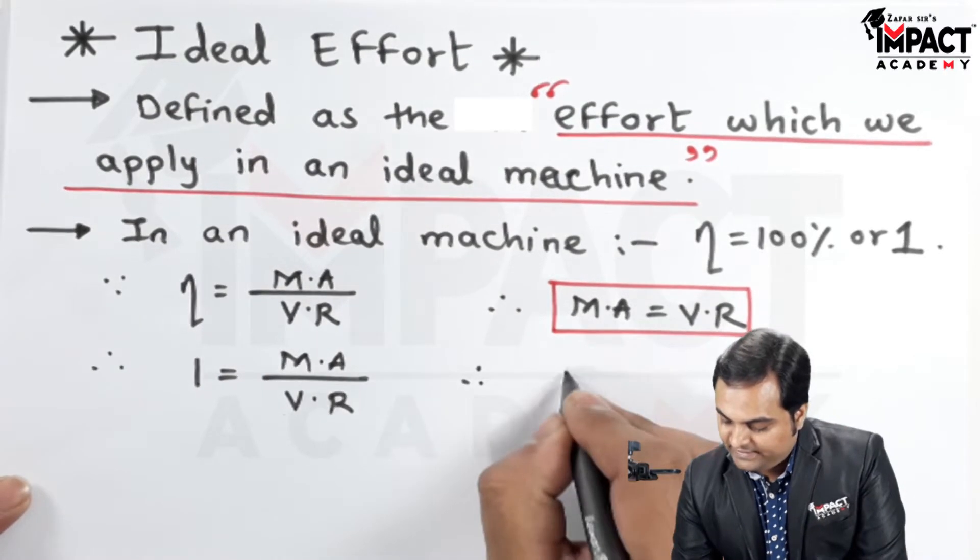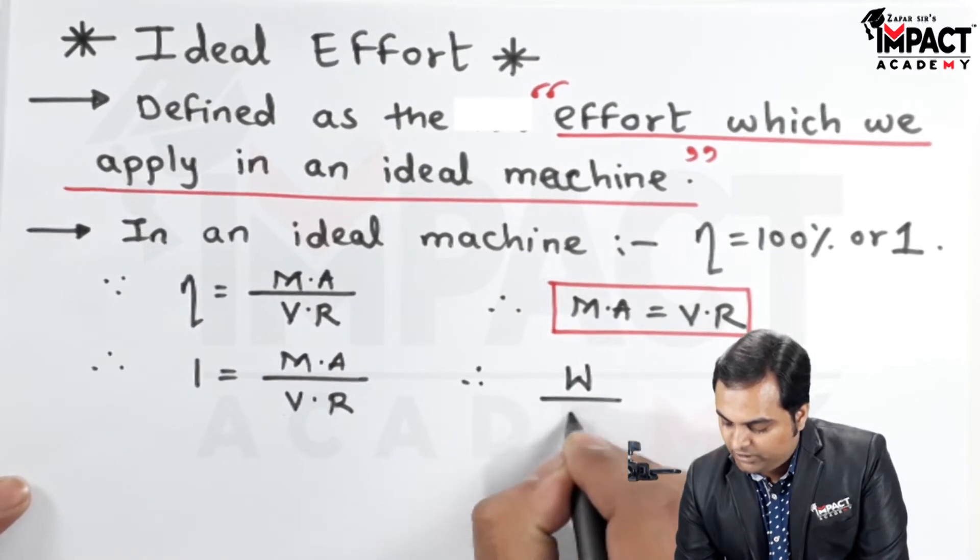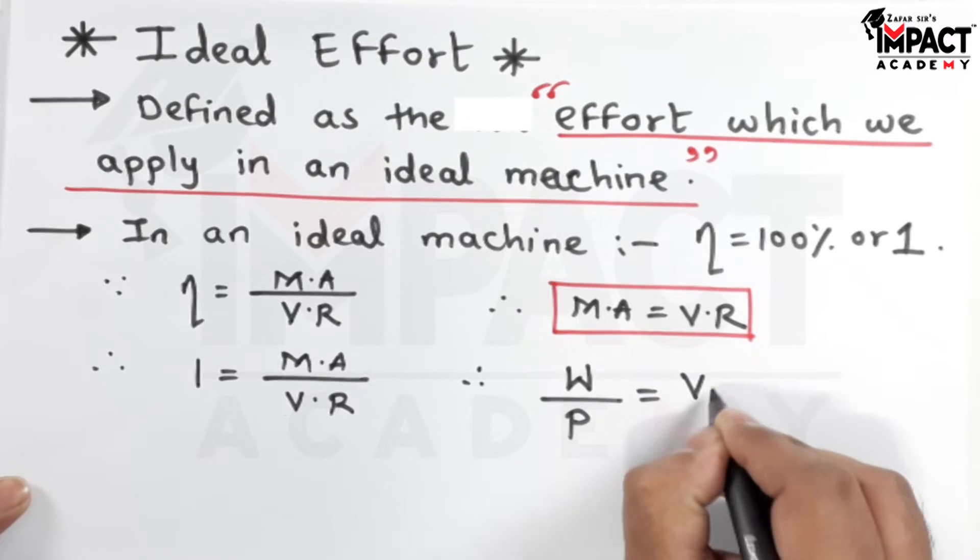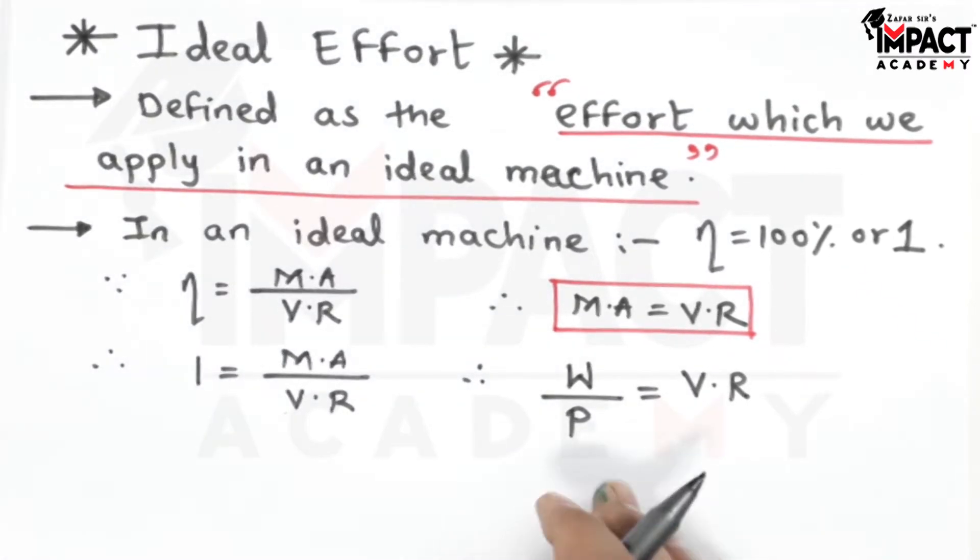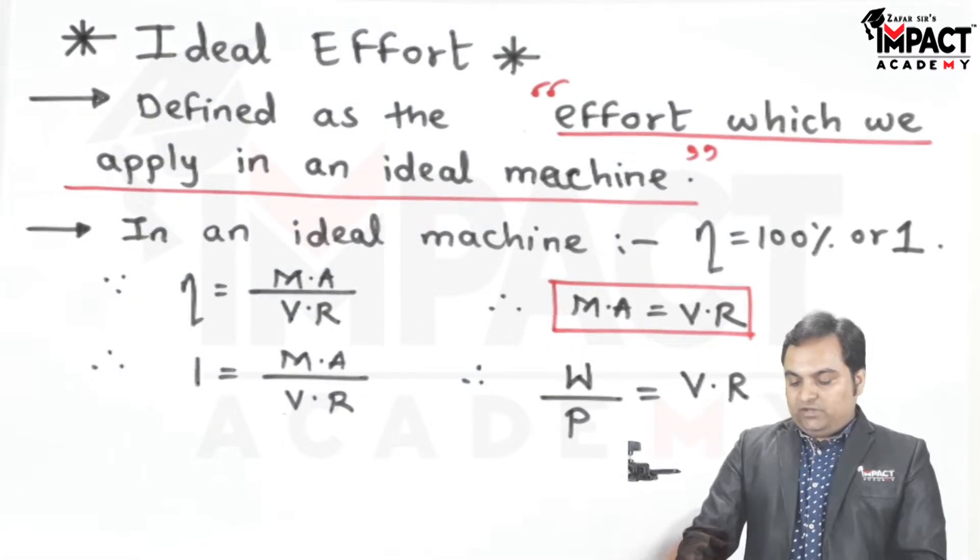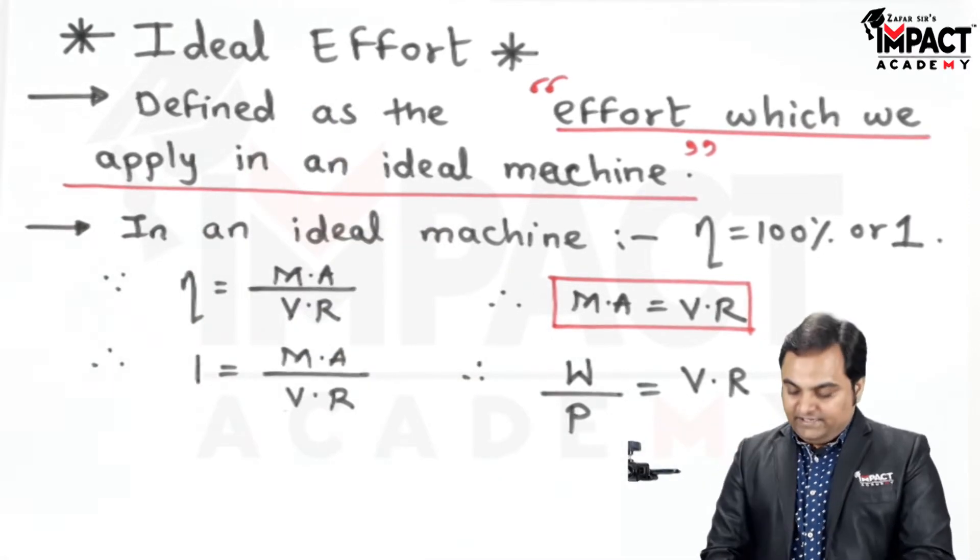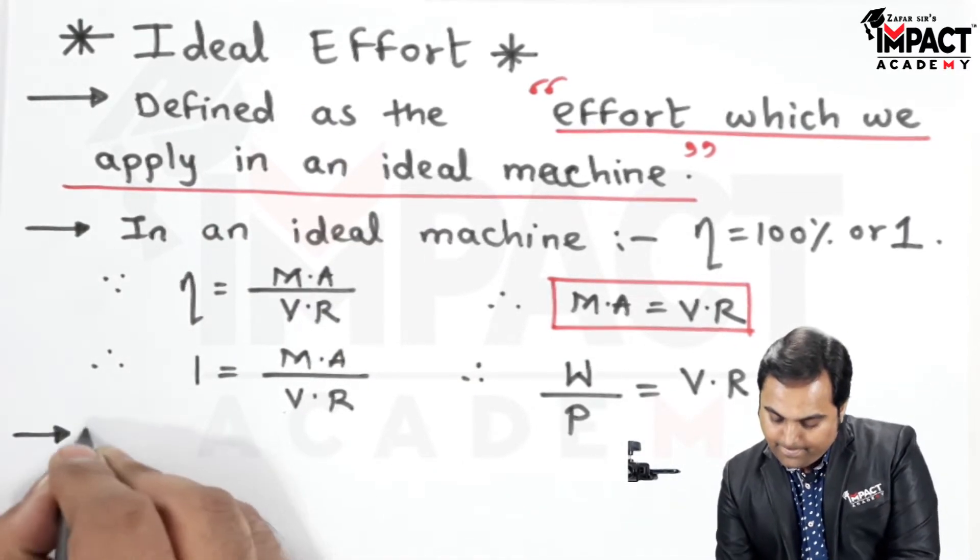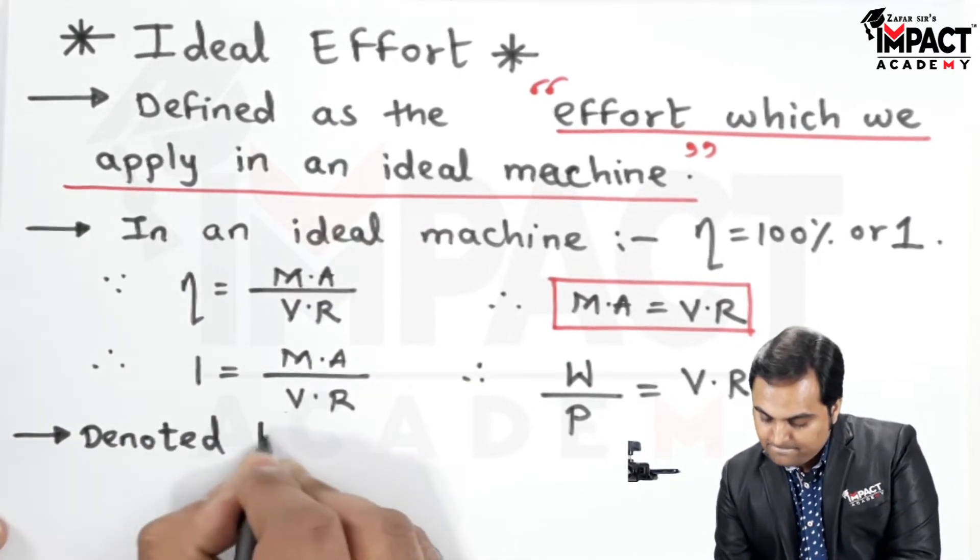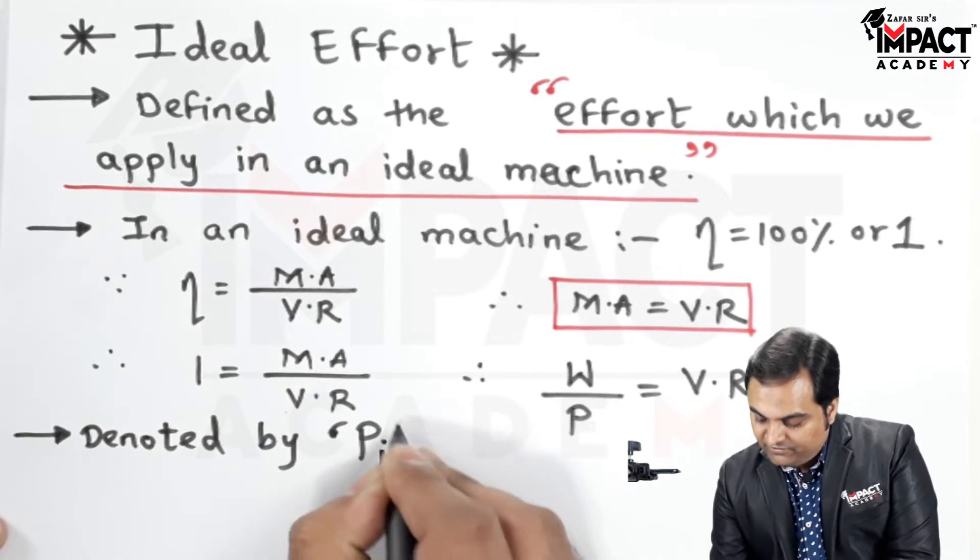Therefore, mechanical advantage, which is load upon effort, is equal to velocity ratio. Now how to get the formula? See, here we want ideal effort, and ideal effort is denoted by Pi (P suffix i).